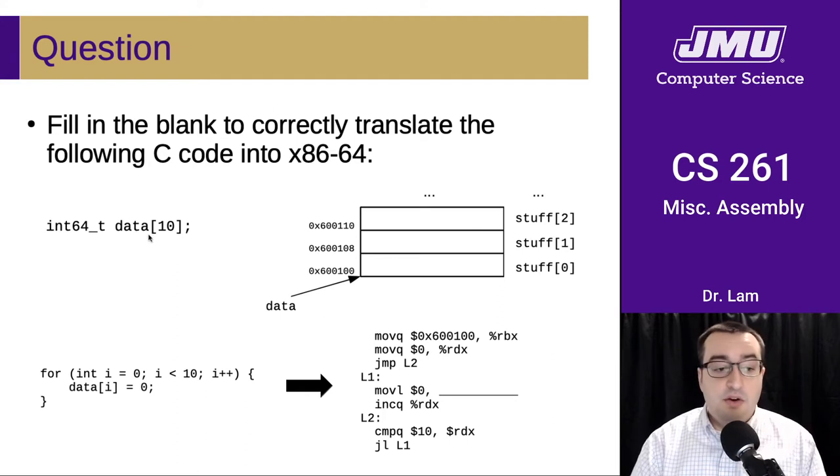Let's assume that we had an array called data. It has 10 64-bit integers. Here's a picture of what the first few elements may look like in memory with their memory addresses. Here is a loop in C that basically just sets all those elements to zero, and here is the corresponding code in assembly with a little bit left out. I'm asking you to fill in the blank. We initialize RBX to the base address of the entire array, we set RDX to zero, and then we have a jump to middle loop here where we compare RDX to 10. If RDX is less than 10, we jump back to the beginning and execute the loop body.